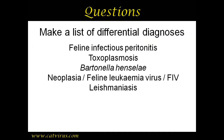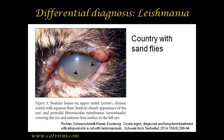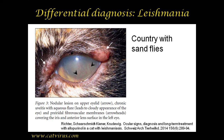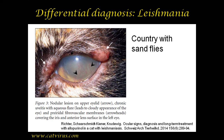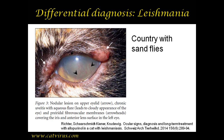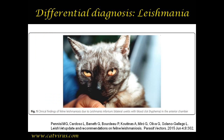Next we have Leishmania. Being a Brit and having lived most of my life in Scotland, I've never personally seen a case of feline Leishmania, so I am showing photographs of published cases. Cats have to be bitten by sand flies to acquire Leishmania infection; therefore it occurs in countries with sand flies such as Italy, Brazil, or Spain. In this case you can see lesions on the skin as well as the eye being affected. Here is a Leishmania case which looks very much like the FIP case we saw earlier, with hyphema in the anterior chamber.